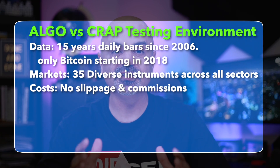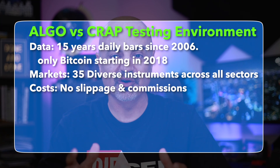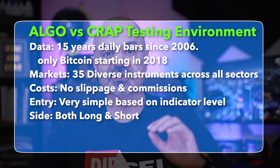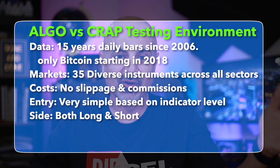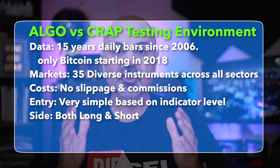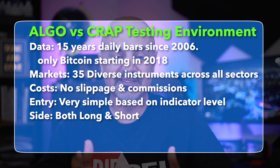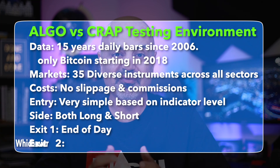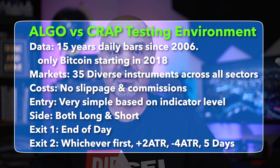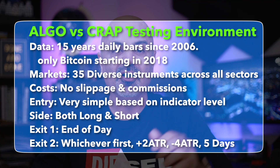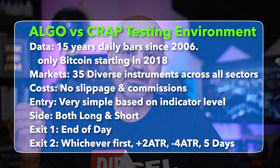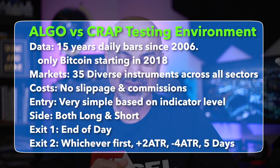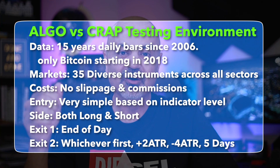There will be no slippage and no commission in all these tests because we just want to measure the raw power of each indicator. The entry and exit rules will also be extremely simple. Each indicator has some level to enter long and short, so we will pick those. Because we are short-term traders, I'm not interested in long-term holding, so exits will be either a single day — exit end of day — or a multiple exit within one week: either five trading days, or a four ATR stop.